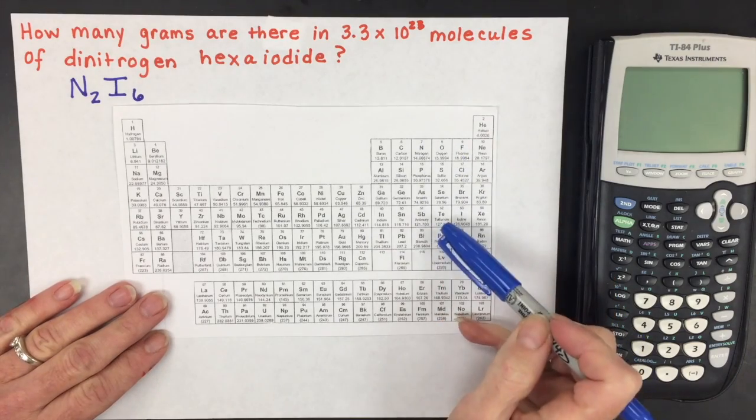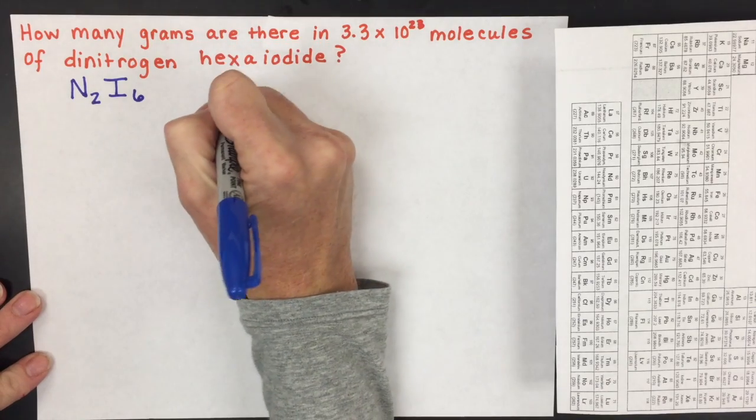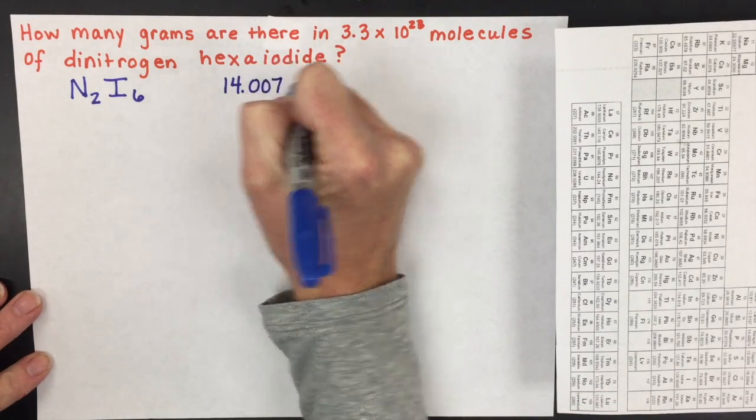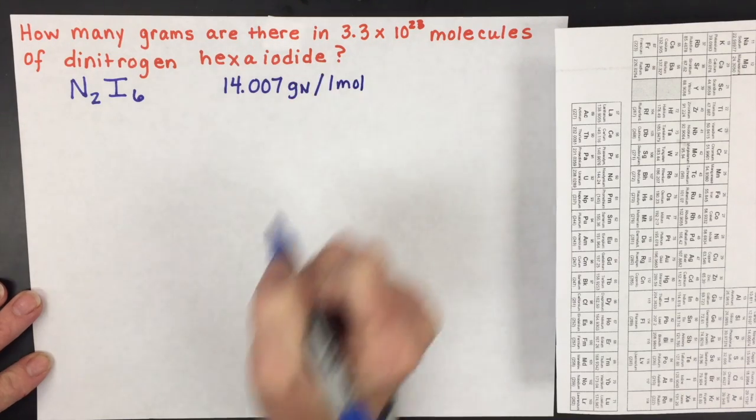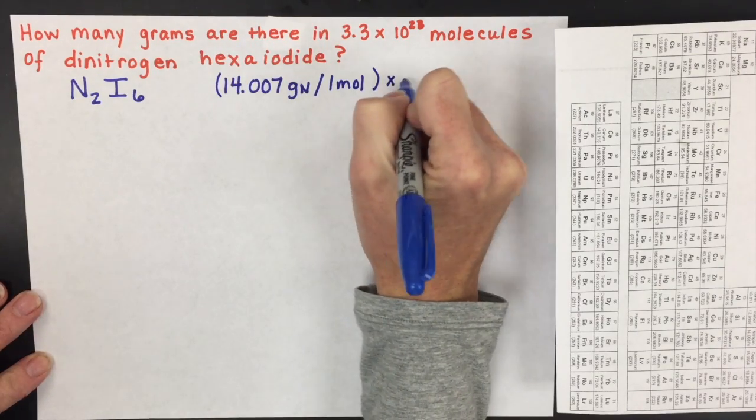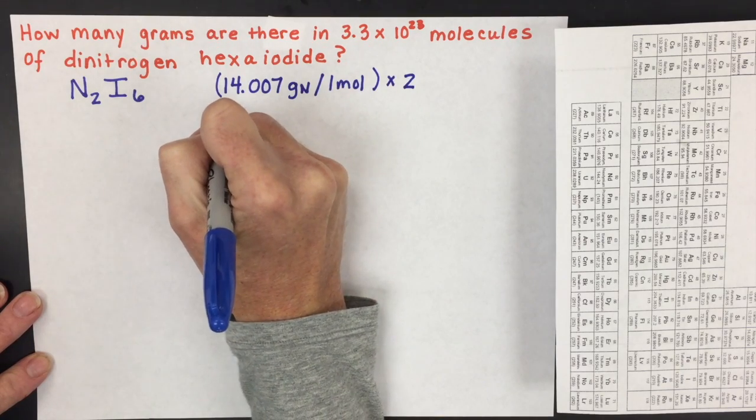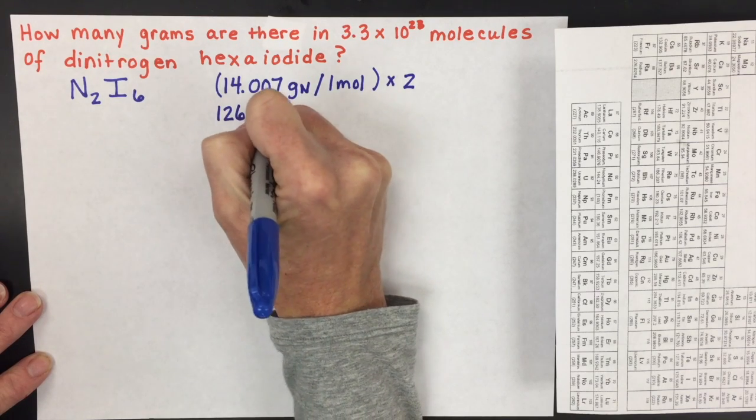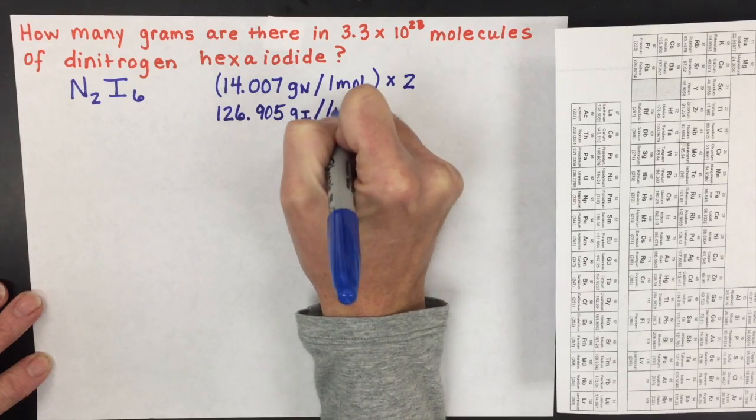The next step after that is to look up the atomic mass for nitrogen and for iodine on the periodic table. The atomic mass for nitrogen is 14.007 grams of nitrogen for every 1 mole of nitrogen. We have 2 nitrogens in our compound, so we're going to multiply this atomic mass by 2. The next is to look up iodine, which has an atomic mass of 126.905 grams of iodine for every 1 mole.